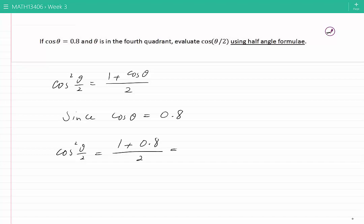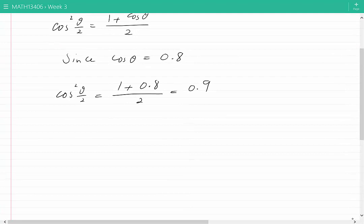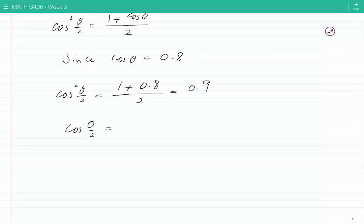That's 1.8/2, which is 0.9. Therefore cos(θ/2) would be equal to ±√0.9, which approximately would be ±0.95.